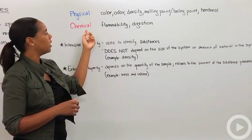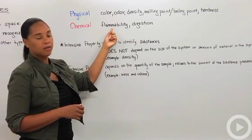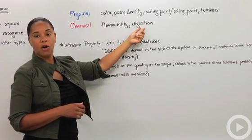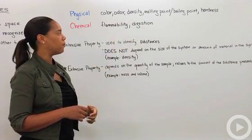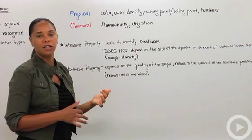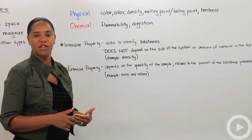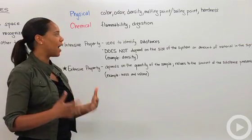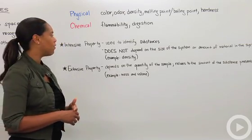A chemical property is something like flammability and digestion. So when you eat food, how it digests in your stomach. That's the change from a food being solid to you chewing it and then it becoming whatever it becomes in your stomach to become digestible. That is a chemical property of matter.